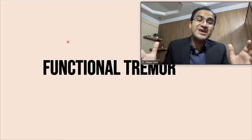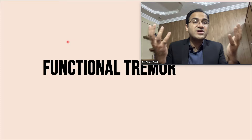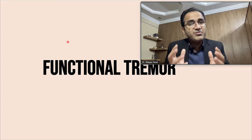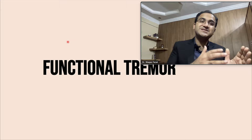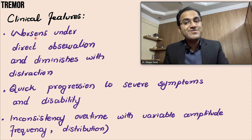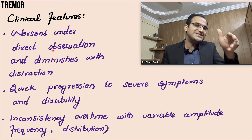Coming to functional tremor — in functional tremor there is no underlying pathology, but the person has a tremor. There is no Parkinson's disease, no essential tremor, no cerebellar disease. The cause of the tremor is psychological. It does not mean the patient is faking — the patient may not even know they have a psychological problem. The treatment is also psychological. Functional tremor worsens under direct observation, but when you distract the patient, there will be a change in the intensity of the tremor.